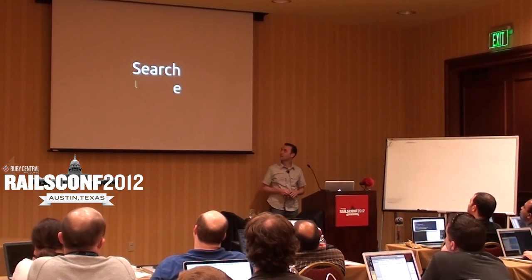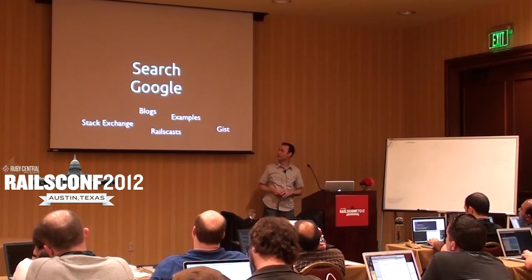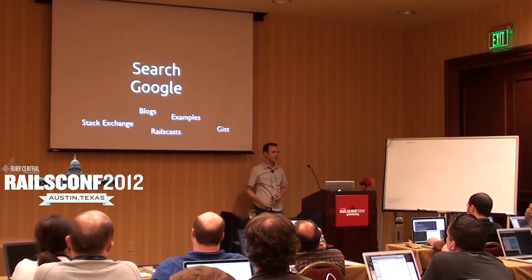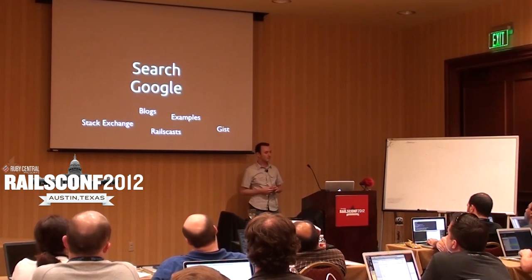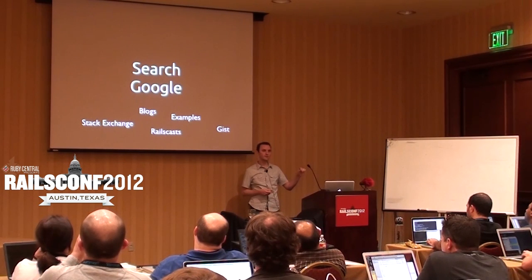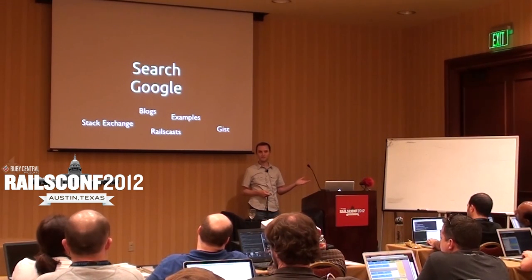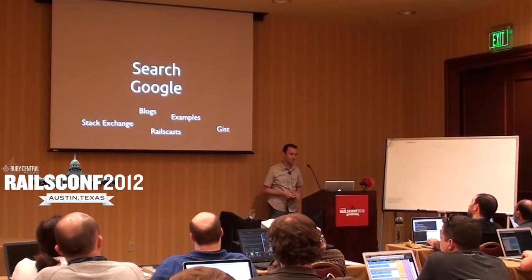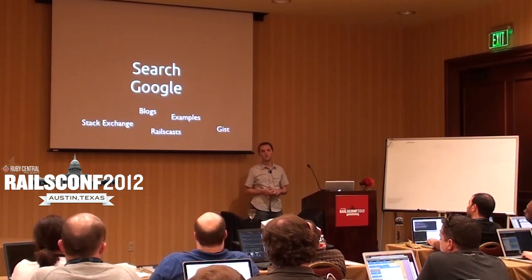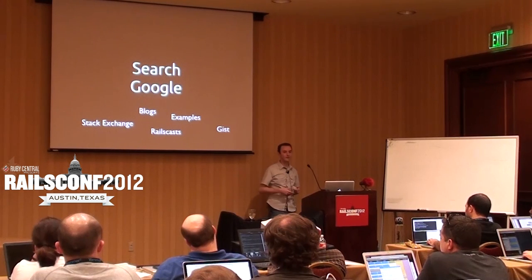So where else would you search? More than likely you'd go to Google. You'd look for blog posts, example code gists, Railscasts, Stack Exchange — all really good resources. I'd actually suggest that if you go to Google to search for something, notice in the left-hand sidebar there's a filter option where you can say 'within the last month' or 'within the last year.' That alone fixes the RubyGems.org problem of surfacing two-year-old results.